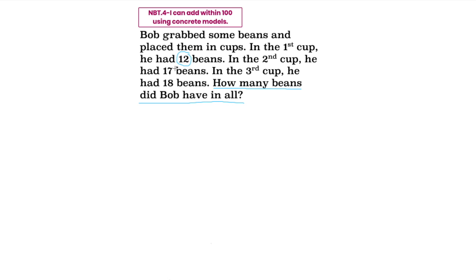In the second cup he had 17 beans — I am going to circle that number as well. In the third cup he had 18 beans — this is my third number that I need to circle. These three numbers tell me how many beans he had in each cup. If I want to know how many beans Bob had in all, I know I need to add those numbers, because 'in all' gives me a hint that I will be adding. So I set up my equation: 12 plus 17 plus 18 equals my sum.